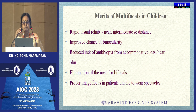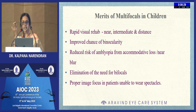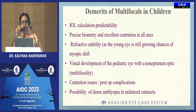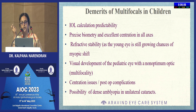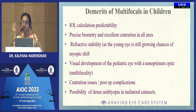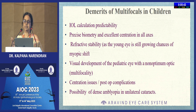The merits of multifocal IOLs in children include rapid visual rehabilitation for near, intermediate, and distance; improved chance of binocularity; reduced risk of amblyopia from cumulative blur; and children do not have to wear bifocals. Demerits include age prediction difficulty, IOL power calculability being very difficult, and the need for child cooperation for precise biometry supported by an optometrist. In very young children, refractive stability is not predictable, and visual development can sometimes be affected because children do not usually complain. Centration issues can also arise from increased inflammation, PC fibrosis, anterior capsule phimosis, and decentration.